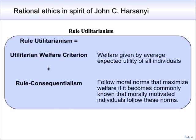Concretely, Harsanyi argues that rational morally motivated individuals should follow rule utilitarian norms. Rule utilitarianism consists of two parts. The first is that one should have a utilitarian welfare criterion — that means one should prefer the situation that maximizes average expected utility, where the average is taken over all individuals. The second part is rule consequentialism: once society has fixed a welfare criterion, morally motivated individuals should follow norms that maximize welfare, given that it becomes common knowledge that morally motivated individuals follow these norms.